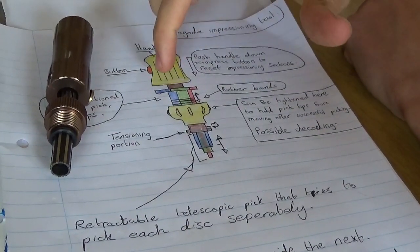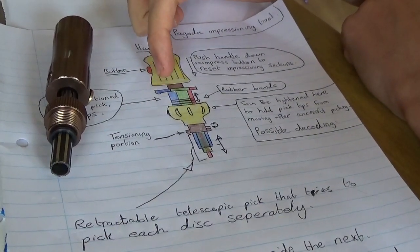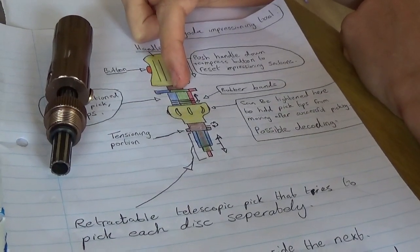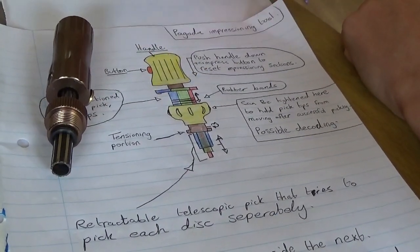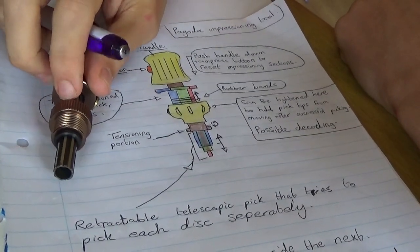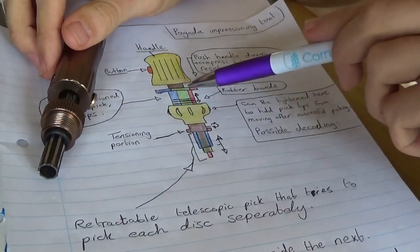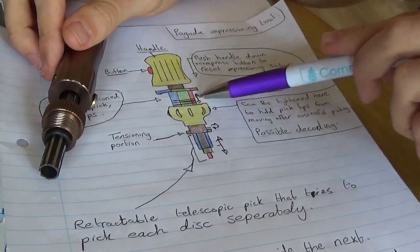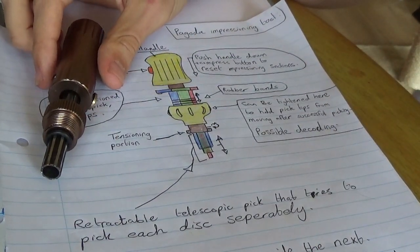The blue one there picks the outermost disc, the green one picks the middle disc, and then the red one picks the innermost disc. Just like these little pick tips do when they move up and down, those teeth, they can move up to different heights. Normally they'd rest flush there.